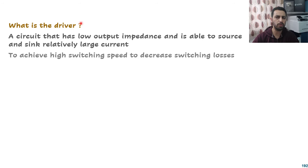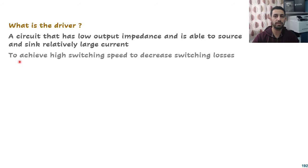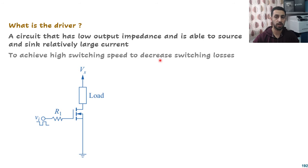So what is the driver? It's a circuit that has very low output impedance to push current very strongly, and is able to source and sink relatively large currents. We had an example before about how much current we have to push during a very tiny time, like 100 nanoseconds, which was about 2 amperes. We have to select a driver capable of doing that, which helps achieve high switching speed and decreases switching losses.